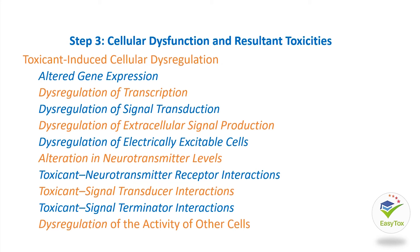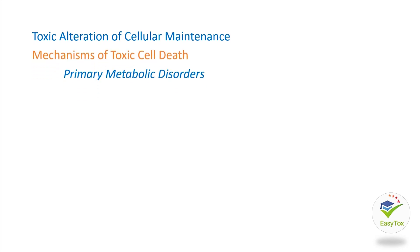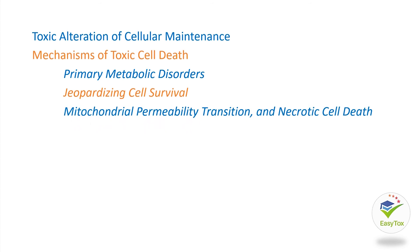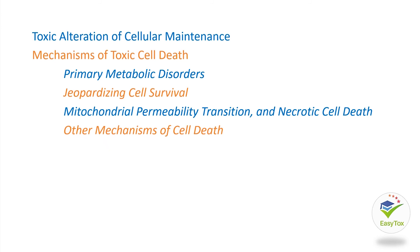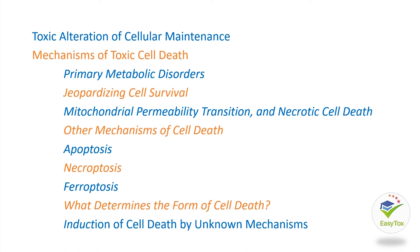Next is Toxic Alteration of Cellular Maintenance. Mechanisms of Toxic Cell Death, with subsections: Primary Metabolic Disorders, Jeopardizing Cell Survival, Mitochondrial Permeability Transition and Necrotic Cell Death, Other Mechanisms of Cell Death, Apoptosis, Necroptosis, Ferroptosis, What Determines the Form of Cell Death, and Induction of Cell Death by Unknown Mechanisms.